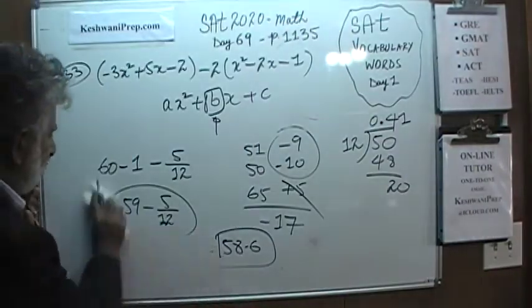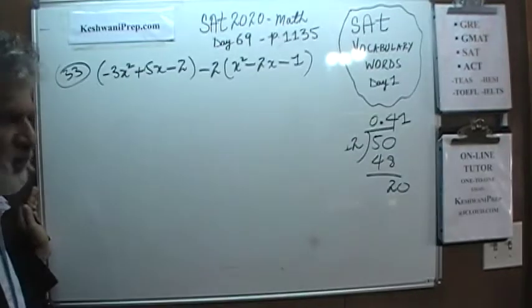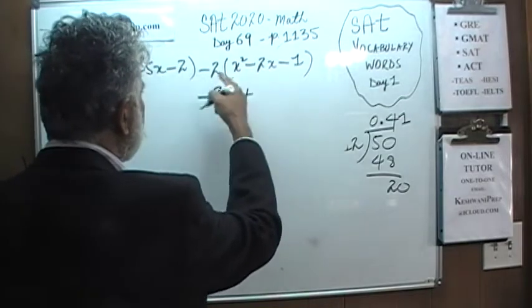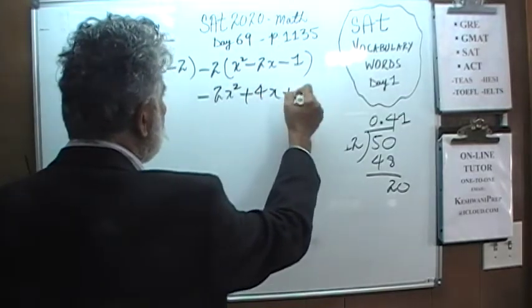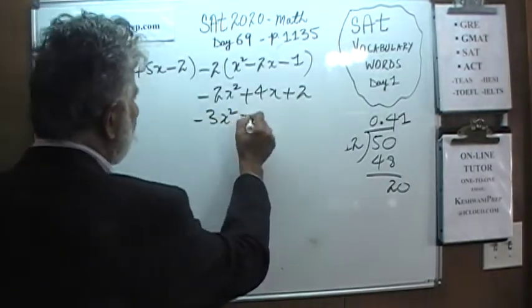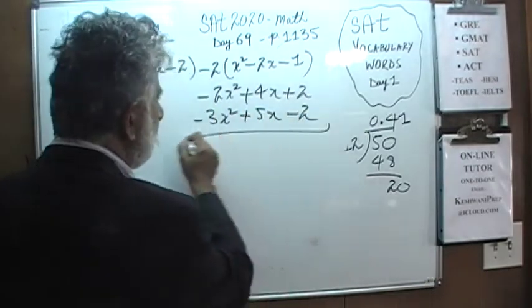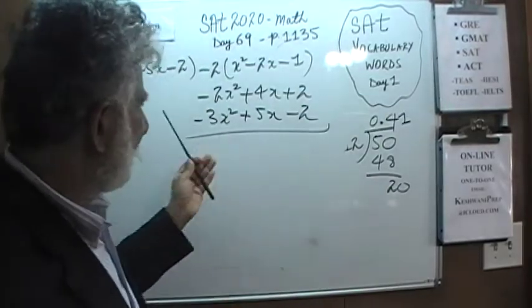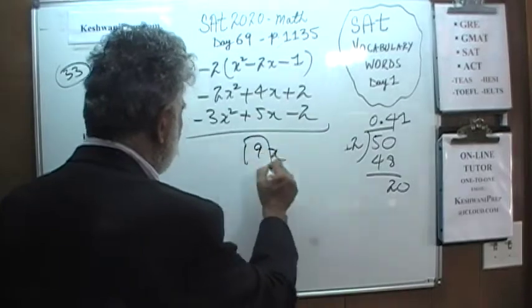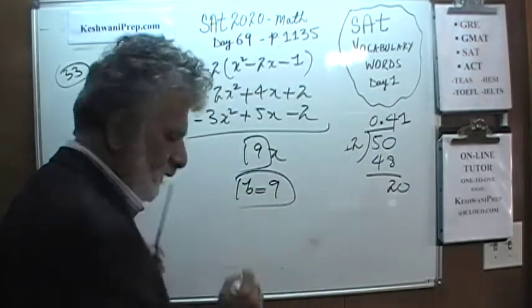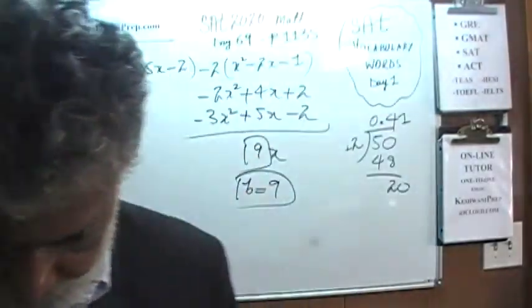We need the room. It's just a matter of paying attention. Negative 2 times x squared is going to be negative 2x squared. Negative times negative is positive. 2 times 2 is 4. Positive 4x. And positive 2. And here we just rewrite what we have. Negative 3x squared, plus 5x, and negative 2. We're not interested in anything other than the coefficient of x. It's just 9x. The value is 9. The value of b is 9.